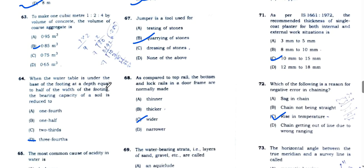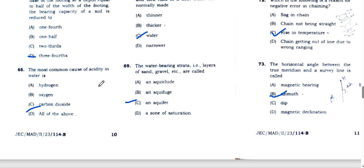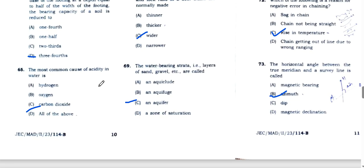What is the minimum reliable distance for planting trees from the foundation of a building? That is 8 meters. For M15, one cubic meter, the ratio is 1:2:4 volume of the concrete. The volume of the coarse aggregate is 2/7 into the volume of the concrete, that is one, which is 0.85 cubic meters, option B.